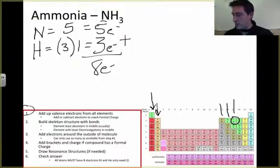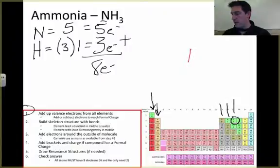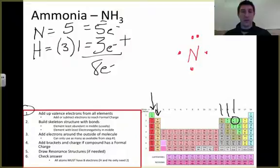Number two, I'm going to build my structure. Now nitrogen is going to go in the middle because there are few nitrogens, and hydrogen can only make one bond. So I've got my nitrogen right here, and nitrogen has five valence electrons. One, two, three, four, five. Again, we don't pair them up until we have enough to pair them up. And I've got three hydrogens.